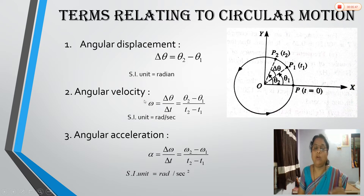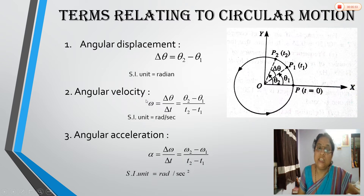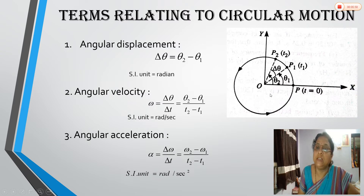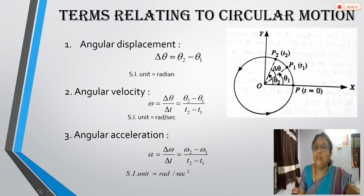The second term is angular velocity, analogous to linear velocity. Just as linear velocity is the rate of change of linear displacement, angular velocity is the rate of change of angular displacement with respect to time. If the object moves from P1 to P2, the angular displacement is θ2 minus θ1, and the time taken is t2 minus t1, so angular velocity ω equals (θ2 − θ1) / (t2 − t1).